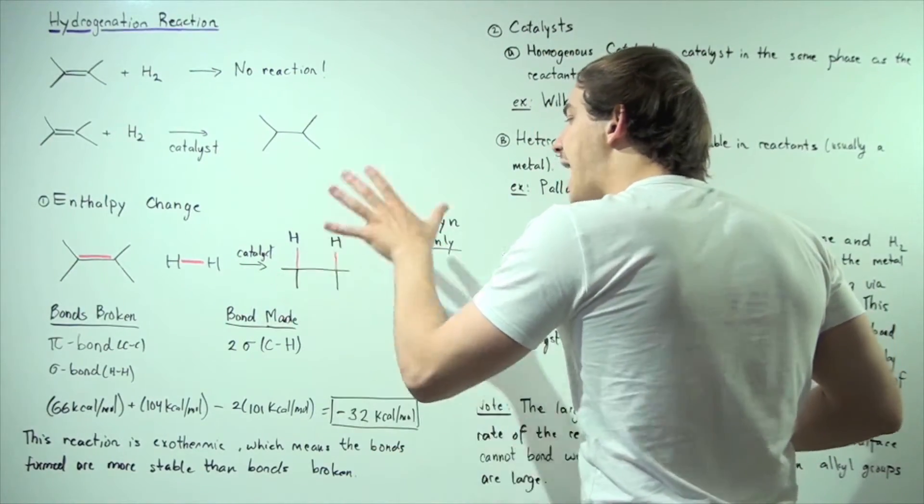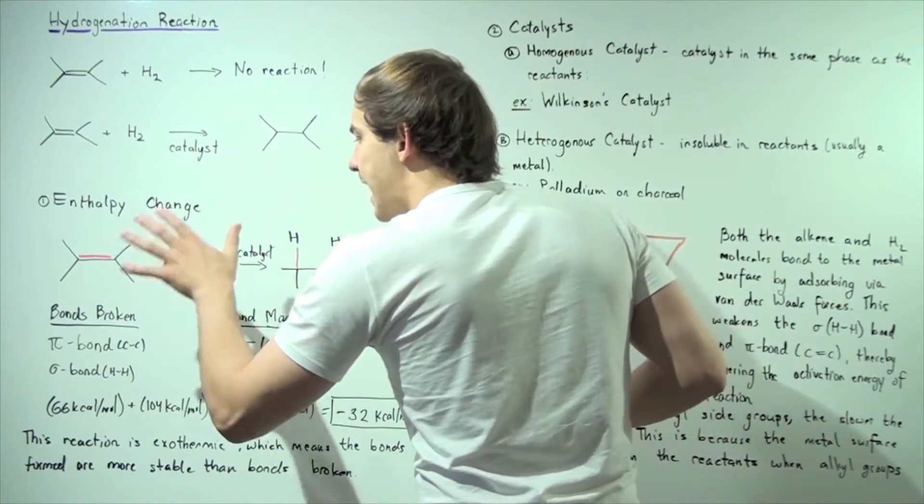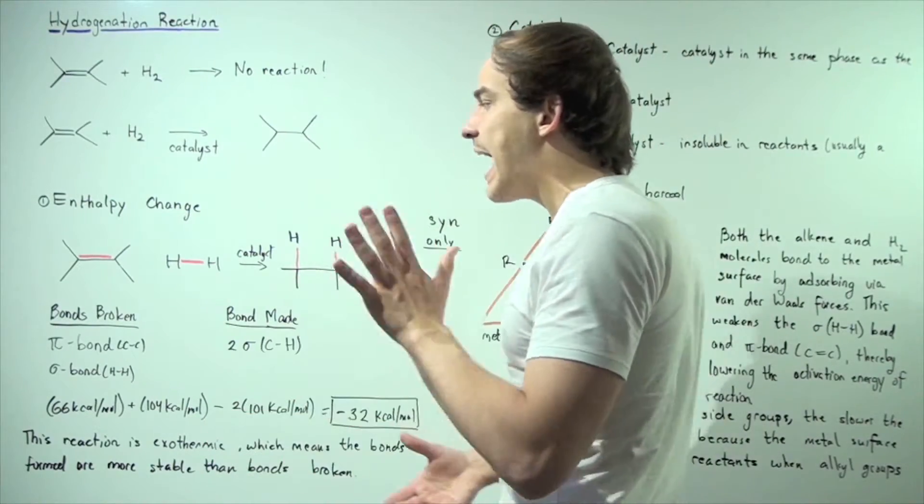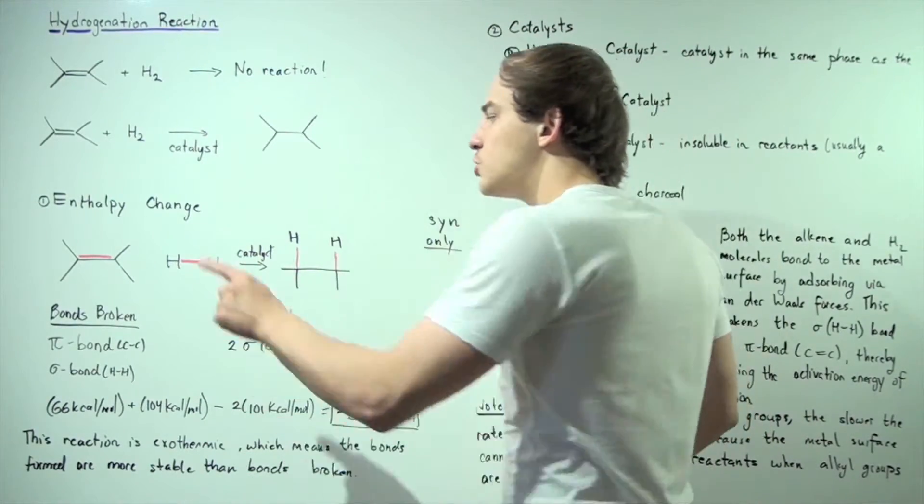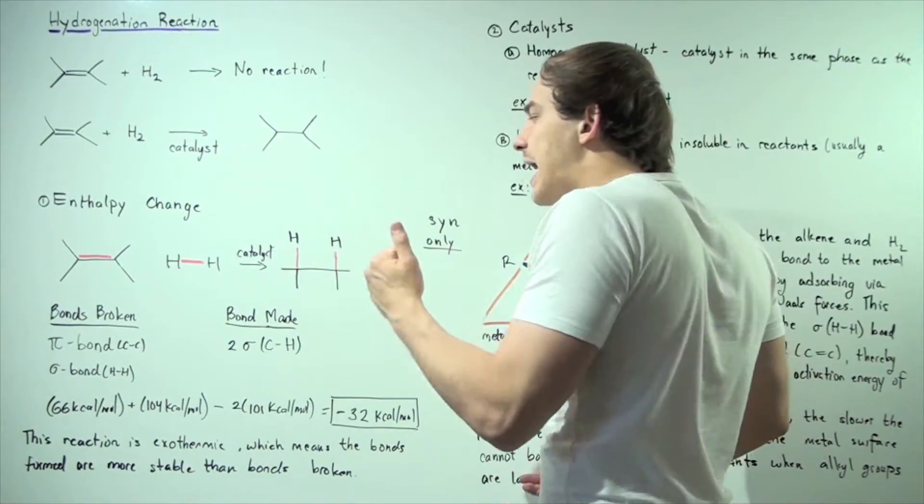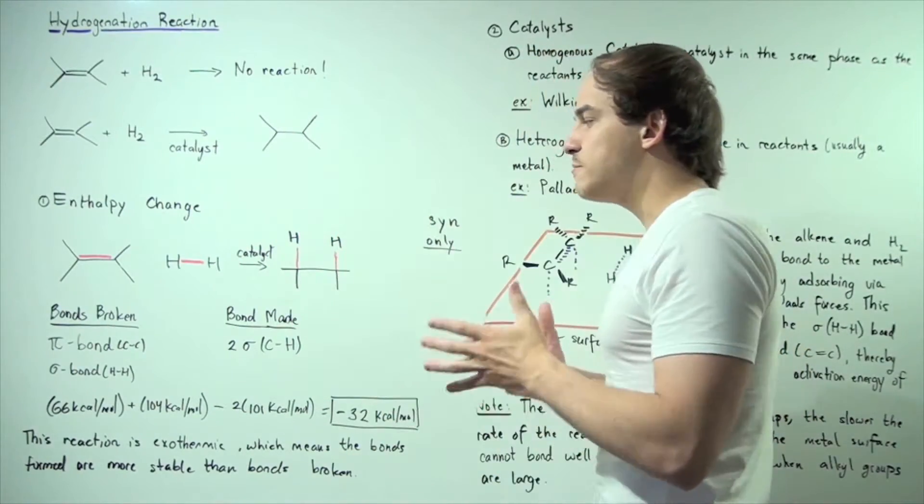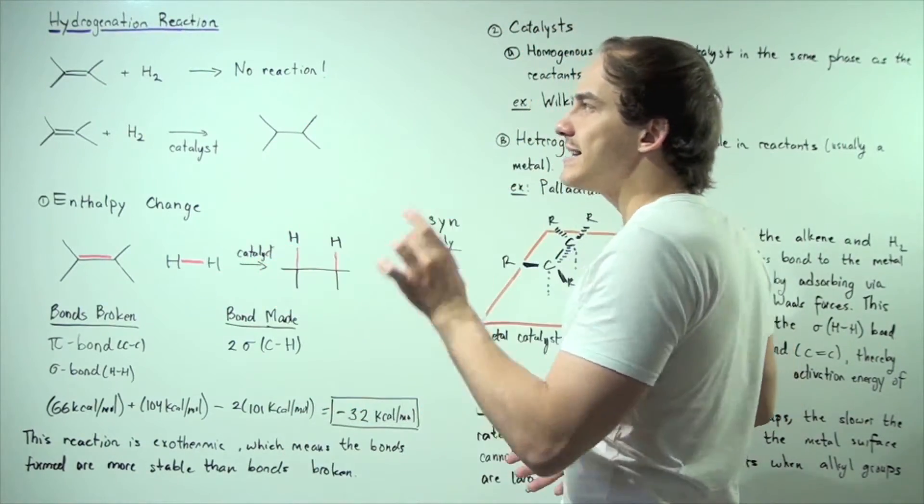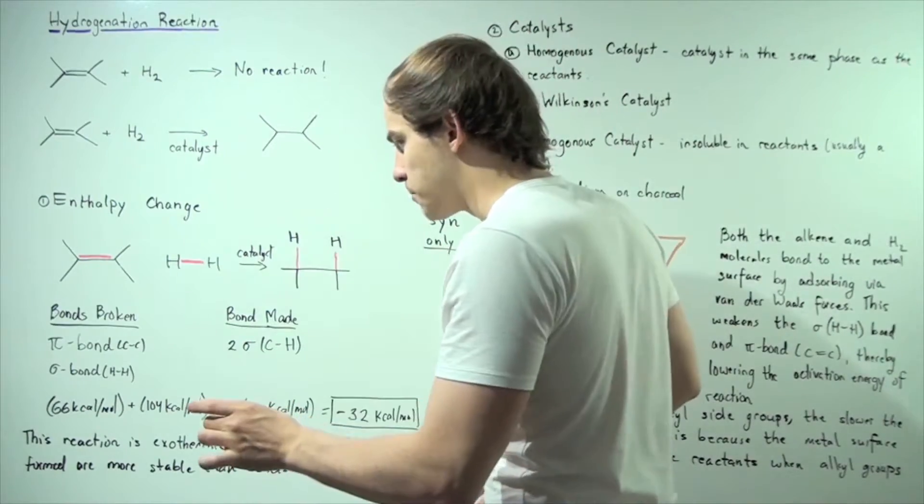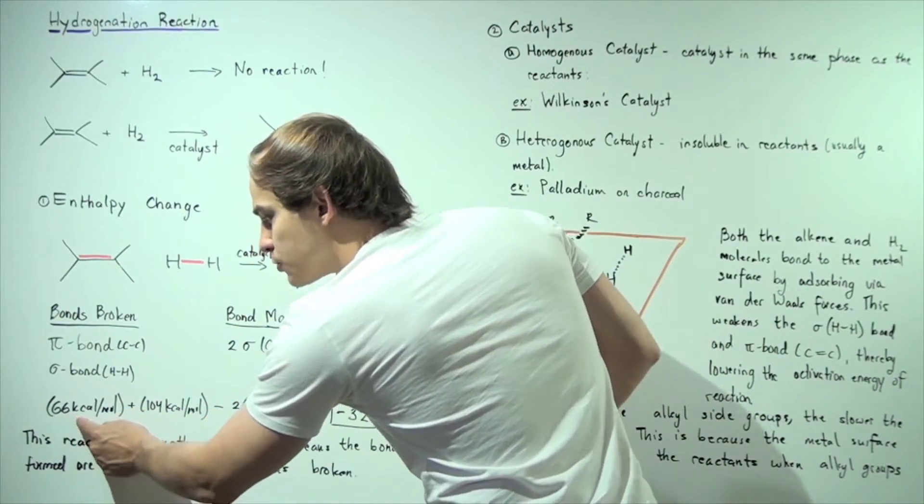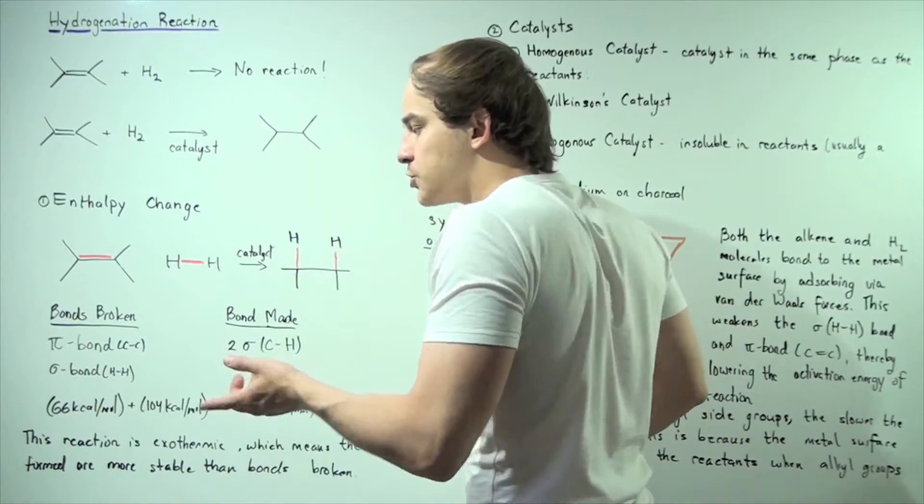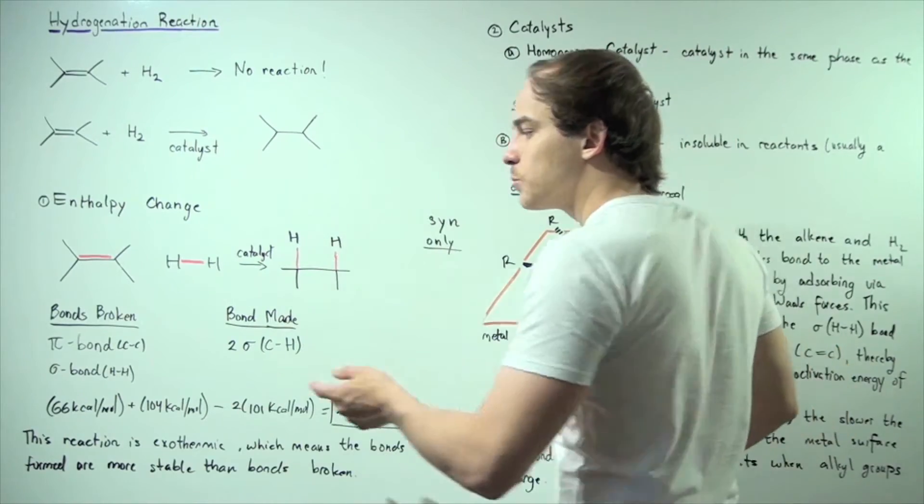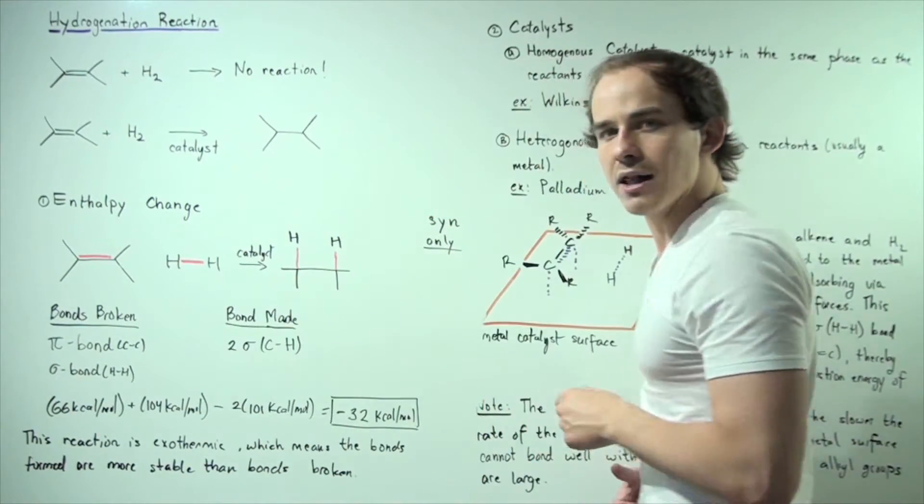When bonds are made, energy is released. When bonds are broken, energy is inputted. So that means we simply have to calculate how much energy is required to break these two bonds and then subtract the amount of energy that is being released. And this will allow us to determine if our reaction is exothermic or endothermic. So we have 66 kcal per mole of energy inputted to break the pi bond and 104 kcal per mole required to break the sigma bond between these two H molecules.